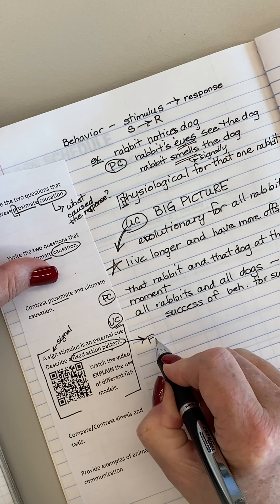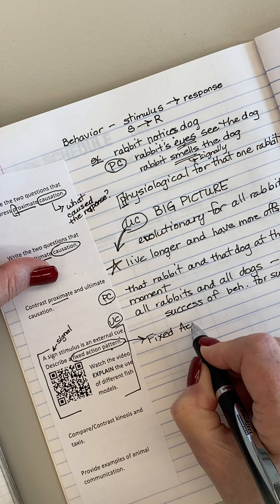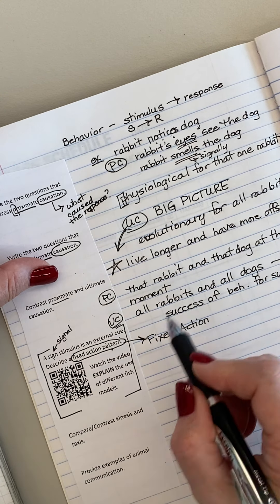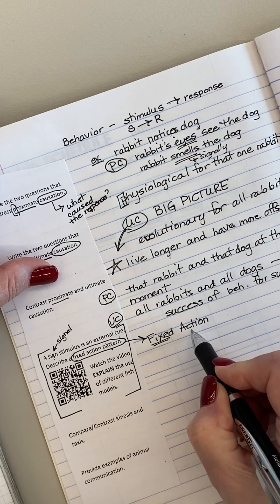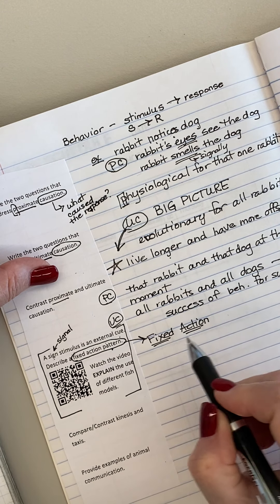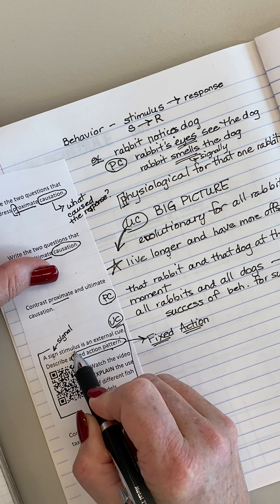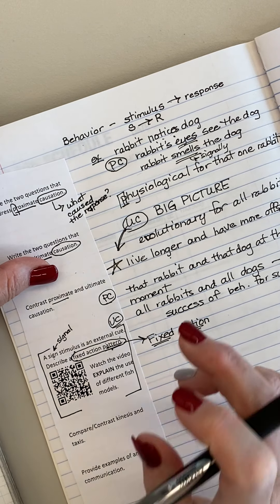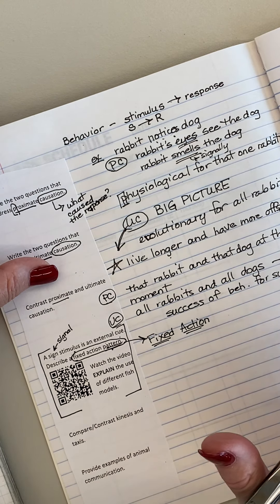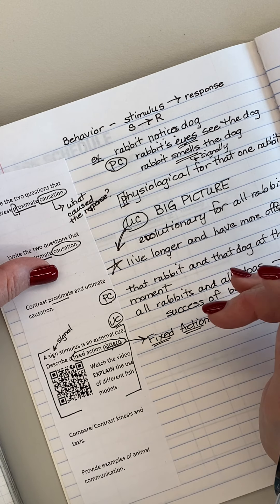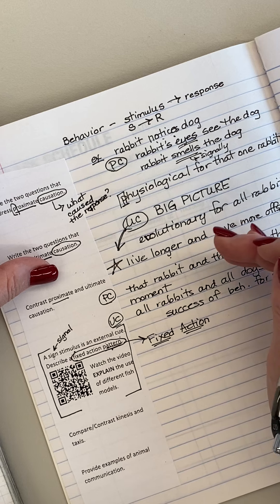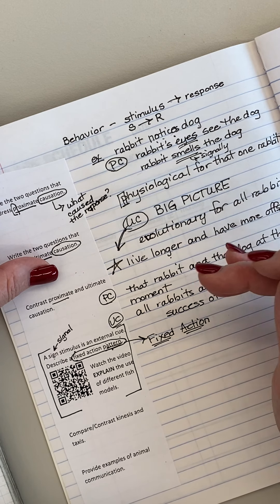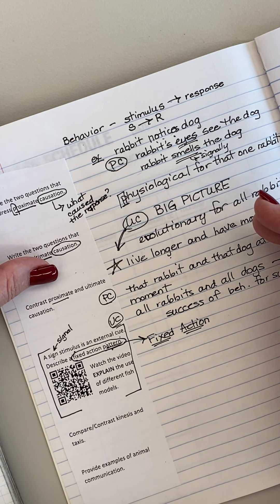So whenever you have a fixed action, a lot of times biology is not as weird as it seems like the definition really is built into the term. Fixed action means that when you have this stimulus, the response is a predictable pattern. So for example, if you're a goose and you have an egg that rolls out of the nest and it's starting to roll out of the nest, so you perceive it rolling.